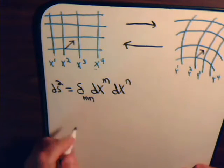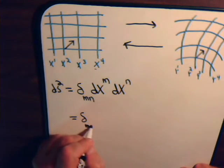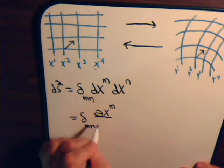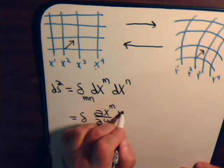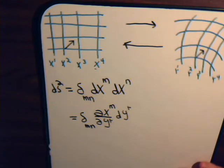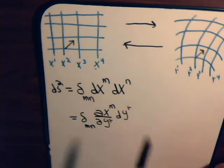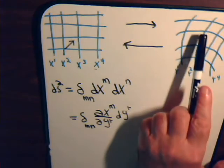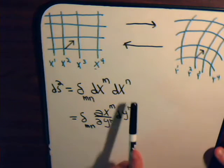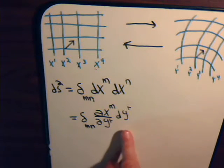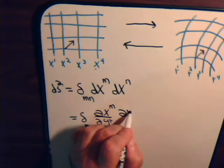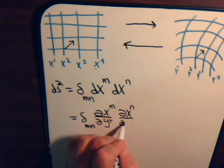Well, in the first video, we demonstrated that dx^m, we can write like this: the partial of x^m with respect to y^r dy^r. And here we're going to have another repeated index. This is dx^m. And again, we're assuming that we know the transformation equations to go from this coordinate system to this coordinate system.